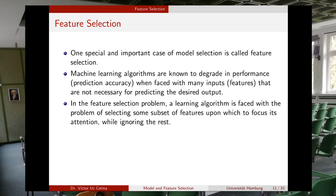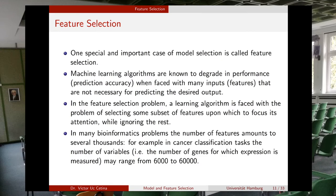In the feature selection problem, a learning algorithm is faced with the problem of selecting some subset of features upon which to focus its attention while ignoring the rest. For example, in bioinformatics the number of features is very large — in the thousands. In a typical cancer classification task, the number of variables could range from 6,000 to 60,000 when we consider the number of genes for which expression is measured. We can have problems with a very large number of features and we need to select which subset of features is the best one for our problem.